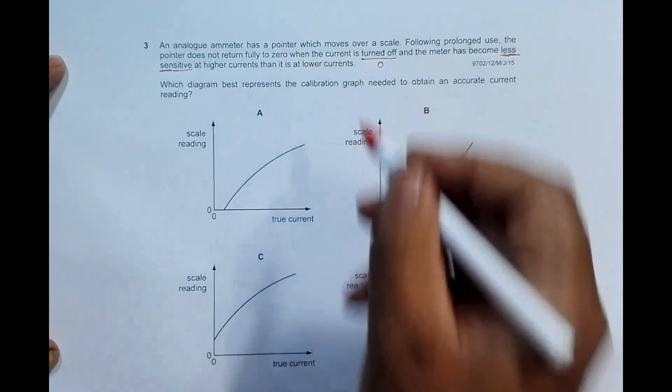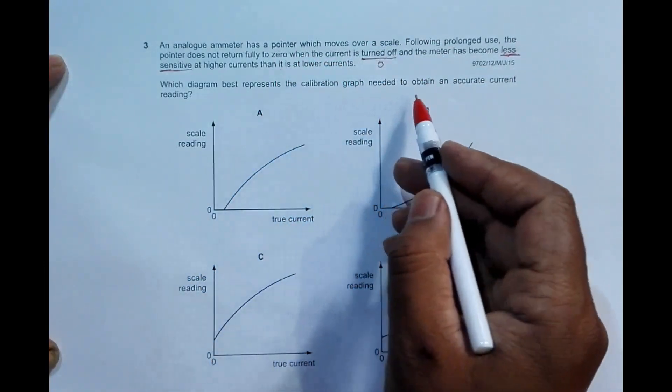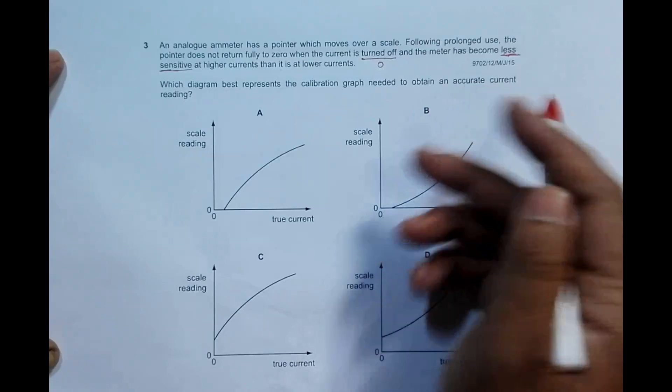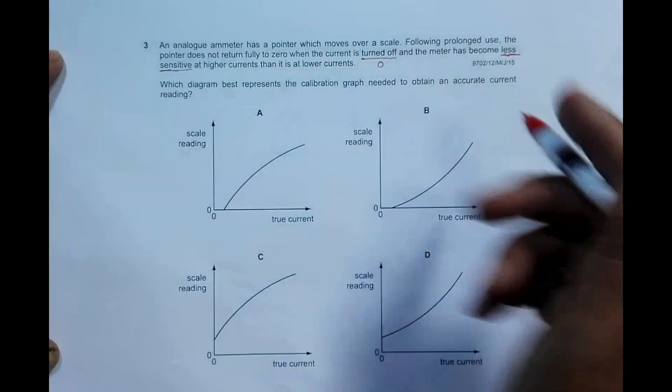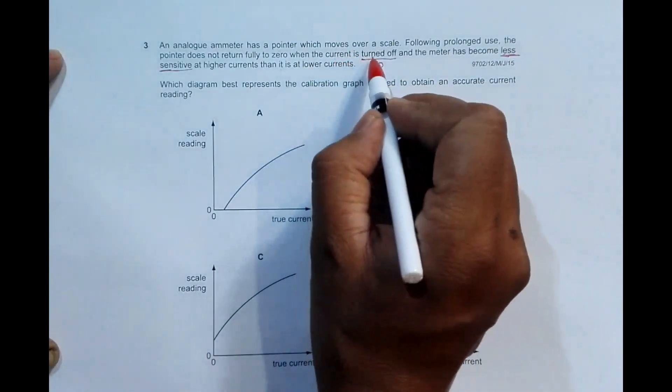Which diagram best represents the calibration graph needed to obtain an accurate current reading? So we have to show which graph is correct. The first point says that when current is zero, the pointer does not return to zero.